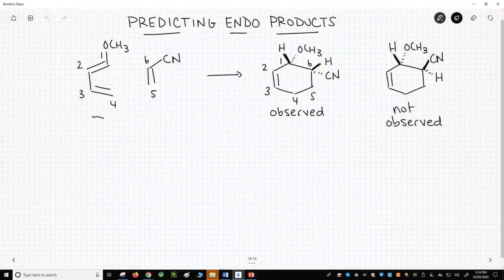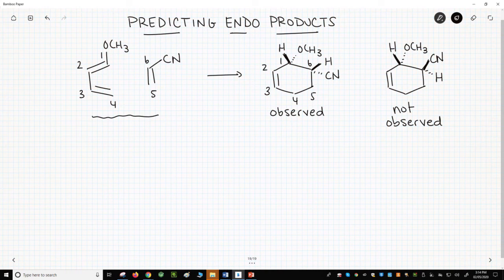Here is our reaction across the top of the slide: 1-methoxy-1,3-butadiene and acrylonitrile. These react to give this particular product, this particular diastereomer. The diastereomer to the far right is not observed. These products both have the correct regiochemistry, which is covered in a previous video in this playlist.